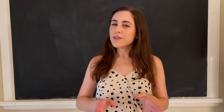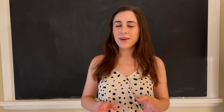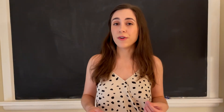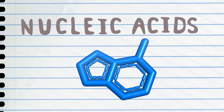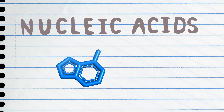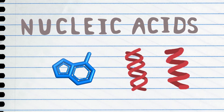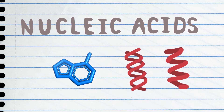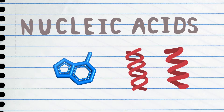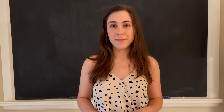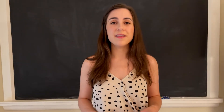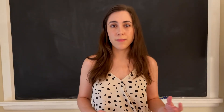Amino acids aren't the only building blocks that have a preferred handedness. Nucleic acids, which make up DNA and RNA, do as well. Interestingly, though, these molecules have the opposite handedness of amino acids — they're mostly in the D form.